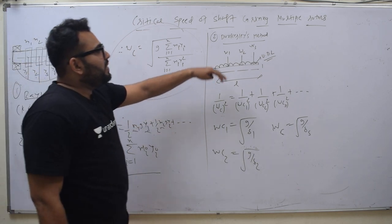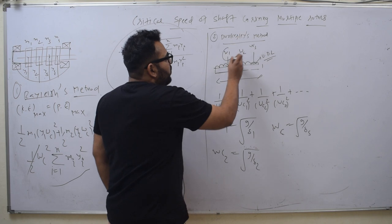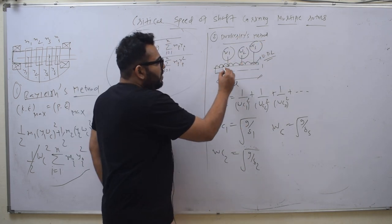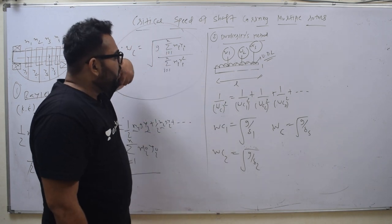Now second is Dunkerley's method. When do you use this? When you use point loads W1, W2, W3 - these are the point loads - and UDL, uniform distribution loads. So now Dunkerley's method is used.